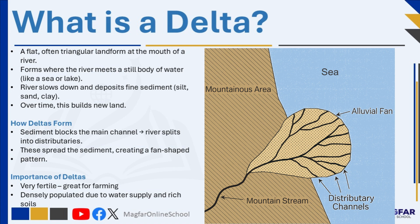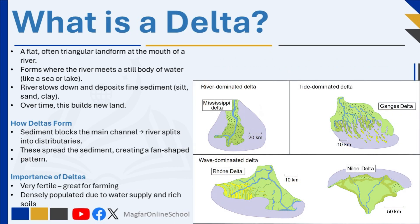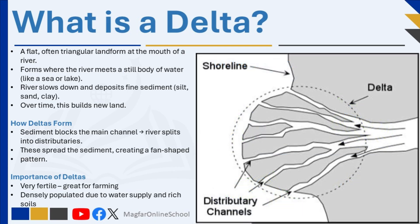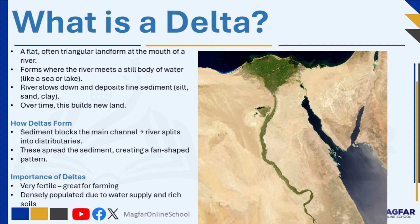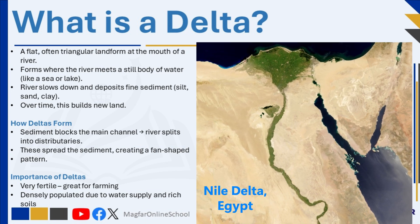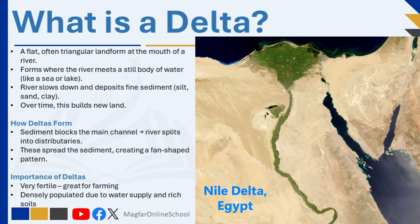The exact shape of a delta is influenced by factors such as wave strength, tidal activity, and how much sediment the river carries. Famous examples include the Nile Delta in Egypt, the Mississippi Delta in the USA, and the Niger Delta in West Africa. However, South Africa has no major deltas because its strong ocean waves and currents carry sediment away before it can settle. Deltas are incredibly fertile, making them ideal for agriculture, and they often become densely populated due to access to water and rich soils.